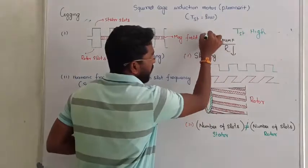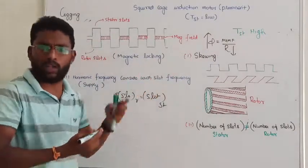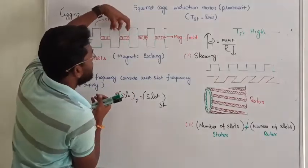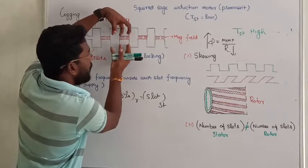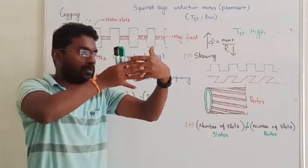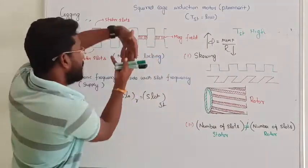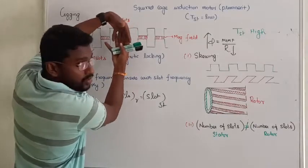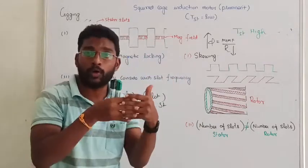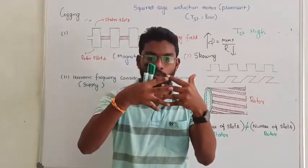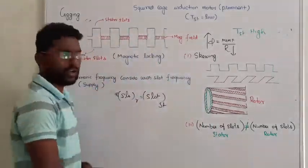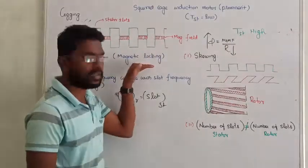When the stator slots and rotor slots are facing towards each other, the flux field is stronger. The rotor gets locked on the slots. Since the rotor slots are equal to the stator slots and facing each other, the rotor tries to move but the stator slots lock it — that is called magnetic locking, which is also known as cogging.